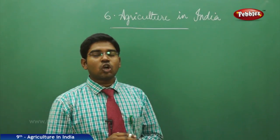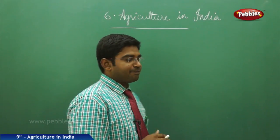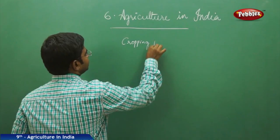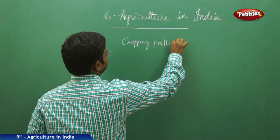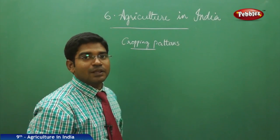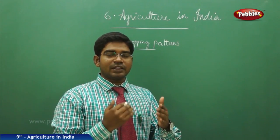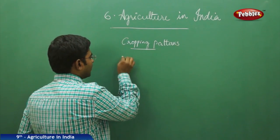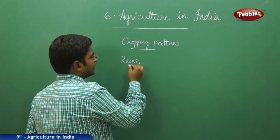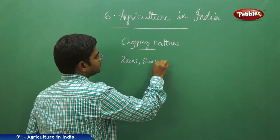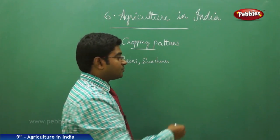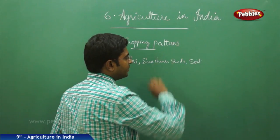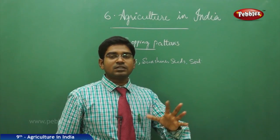Let us discuss the different cropping patterns in India — how cropping takes place across the country. Generally, for agriculture to be successful, we need rains, sunshine, supply of seeds, and fertility of the soil. These factors play a key role in any kind of agricultural pattern.